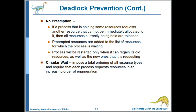Preventing the preemption requirement is possible for things such as CPU cycles — the timer interrupt that causes the CPU to be rescheduled — or memory resources, by swapping out a process and then restarting it later. As noted here, circular wait can be prevented by putting a total ordering on all resource types and requiring that resources be requested in numerical order. Figuring out what that total ordering ought to be can be tricky, however, and may result in inefficiencies for some process types.